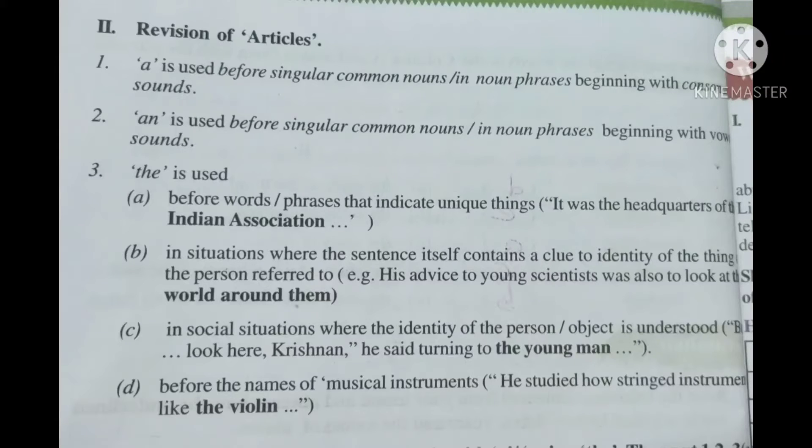In English language there are three articles: a, an and the. A and an are indefinite articles, not definite articles.